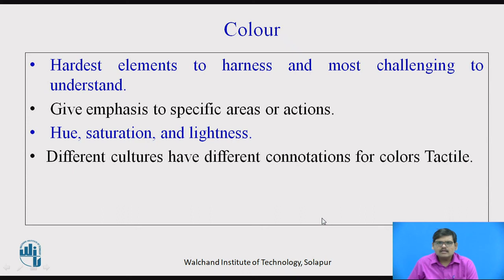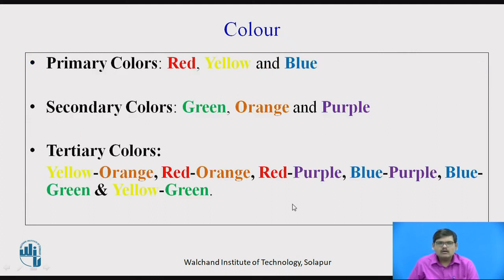Then we have color. Color is the hardest element of design to harness and most challenging to understand. A slight variety in the change in color changes the idea being conveyed. It gives emphasis to specific areas or actions. Hue, saturation and lightness are the properties with which colors are defined. Different cultures have different connotations for colors as well. When you see a machine, its foundation is colored in dark and its upper body in light to suggest heaviness at the bottom.